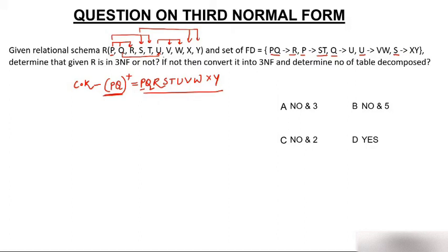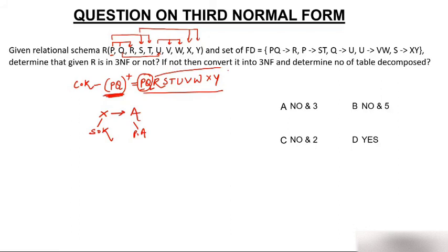Now check whether the given table is in third normal form. The definition of 3NF: if X to A is a non-trivial functional dependency, then either X should be a super key or A should be a prime attribute. The super key is PQ. Prime attributes are P and Q — those that are part of the key. Non-prime attributes are R, S, T, U, V, W, X, and Y.